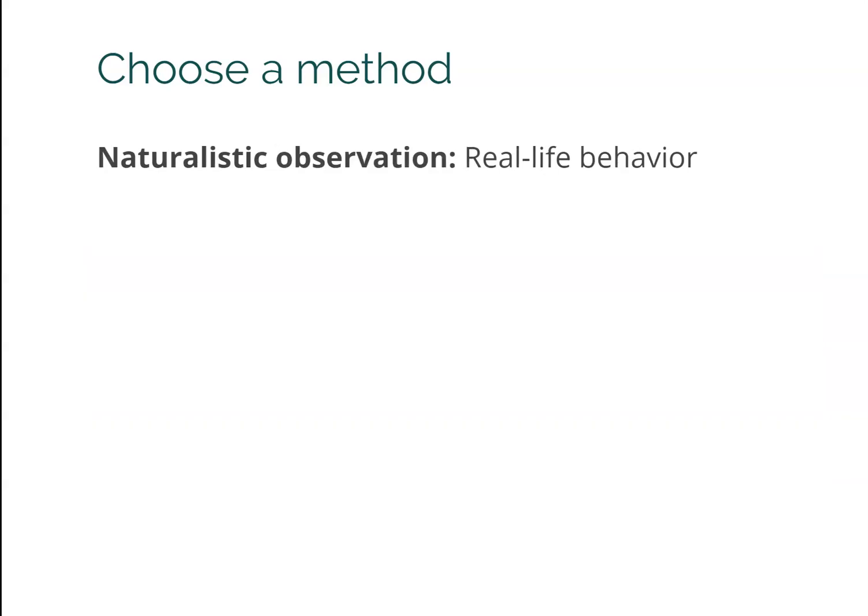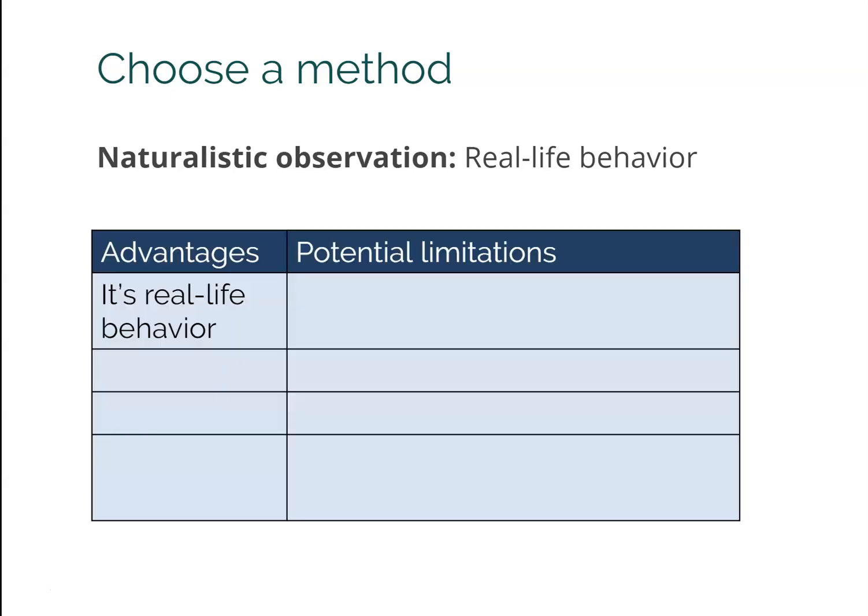Our next method is naturalistic observation — you're just observing real life behavior. In my head I always picture narrators from nature documentaries: 'Here we see the snow leopard in its natural habitat.' That's what we're doing with humans — we're going out and measuring what they actually do. The advantage, of course, is that it's real life behavior; they can't lie about what they've done because you just watched them do it.